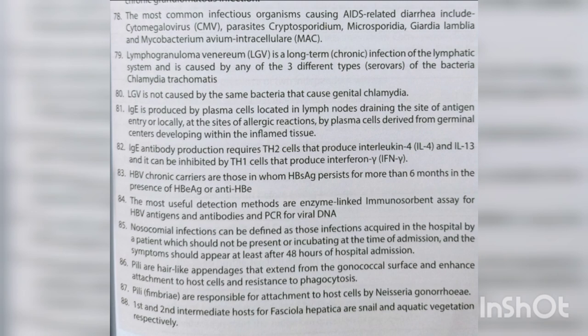HBV chronic carriers are those in whom HBsAg persists for more than six months in the presence of HBeAg or anti-HBe. The most useful detection methods are ELISA for HBV antigens and antibodies, and PCR for viral DNA. Nosocomial infections are those acquired in the hospital that were not present or incubating at the time of admission, with symptoms appearing at least 48 hours after hospital admission.